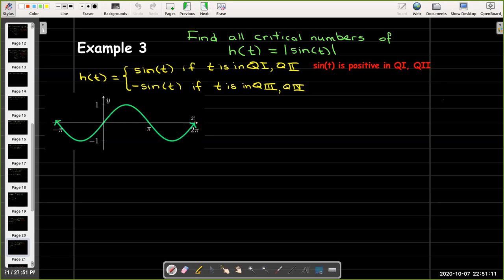And the reason for that is because sine of t is positive in Q1 and in Q2. And then h of t will be minus sine of t if t is in the third quadrant or the fourth quadrant. And that's because sine of t is negative in those quadrants. And the absolute value means we have to change the sign to make it positive.